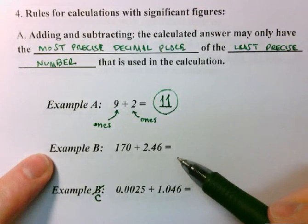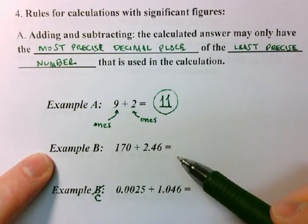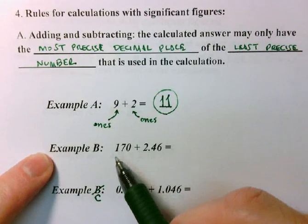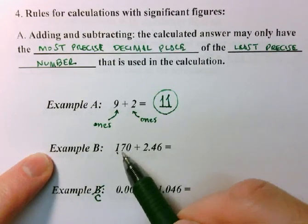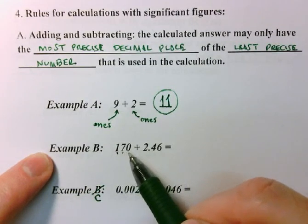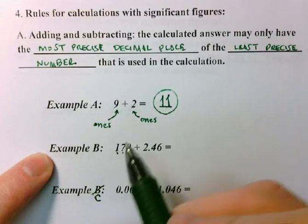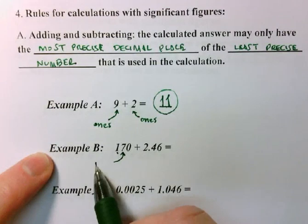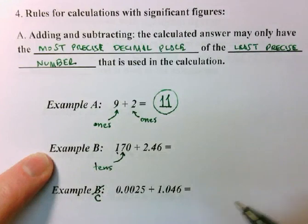Let's move on to example B. This one is a little bit more complicated. Let's look at where these sig figs are. Here's a sig fig, here's a sig fig, and that, according to our rules, is not a sig fig. So the most precise decimal place for this number is the tens column.